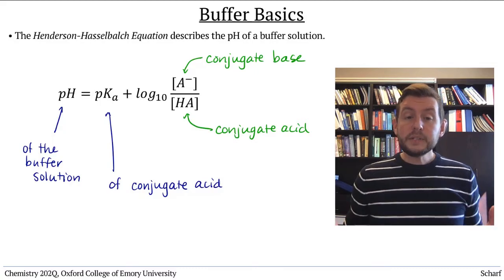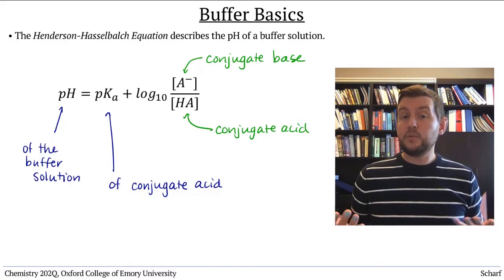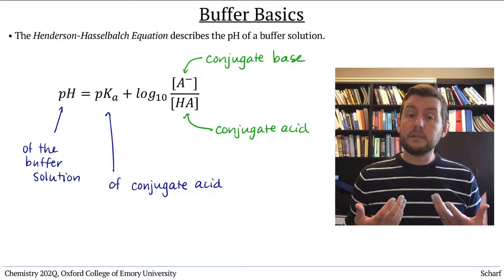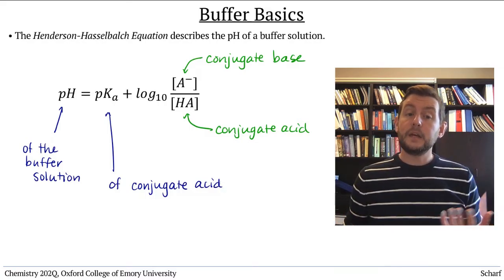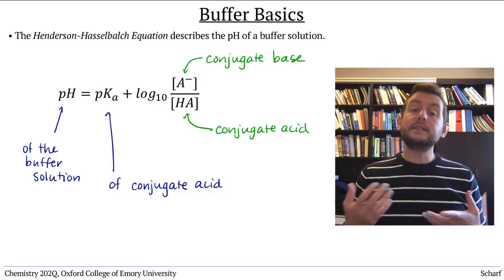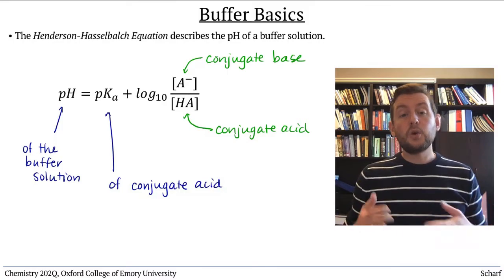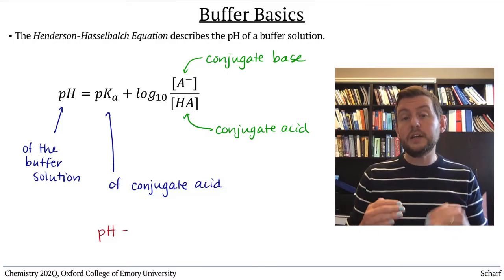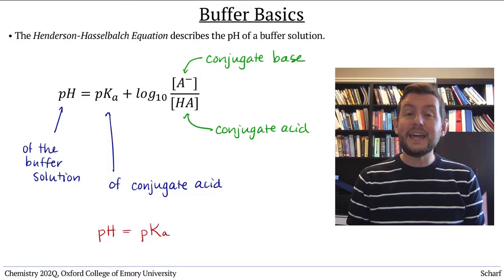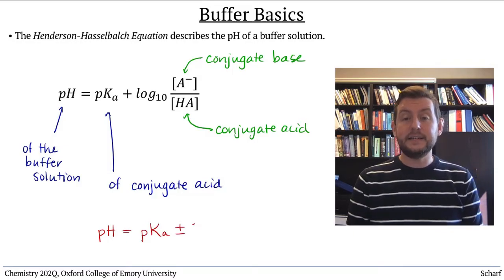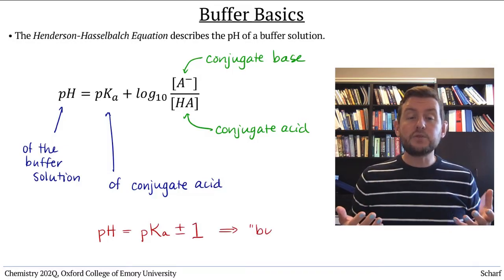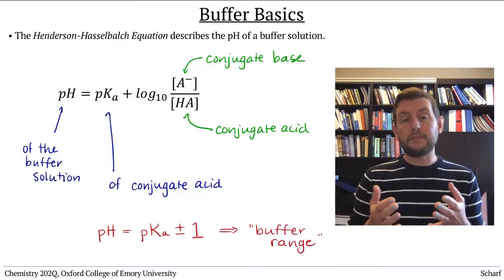In principle, any weak acid-weak base conjugate pair can be used to create a buffer. Each buffer system tends to maintain a pH within plus or minus one unit from the pKa of the conjugate acid. This pH range is called the buffer range.